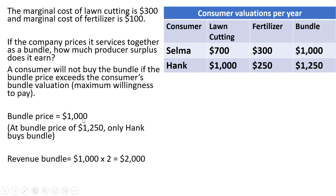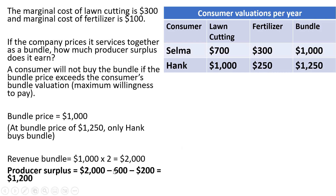By charging a price of $1,000 for the bundle, the revenue here is going to total $2,000 — $1,000 times 2. Producer surplus is going to be the $2,000 revenue from selling the bundle to Selma and Hank, and then we subtract out the marginal costs: 2 times $300 gives us minus $600, and 2 times $100 gives us minus $200. So producer surplus is $1,200. The producer surplus under the bundle pricing strategy exceeded the producer surplus under a strategy of pricing each service separately.